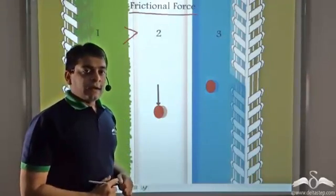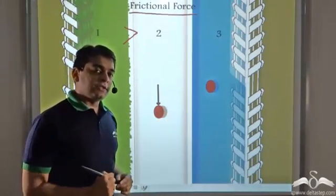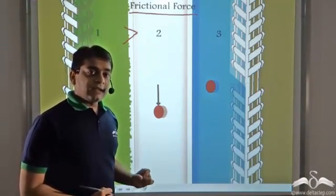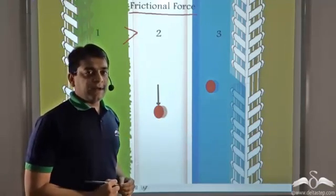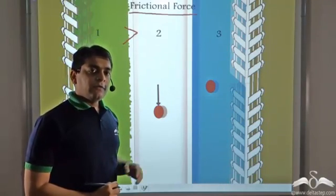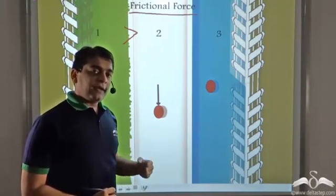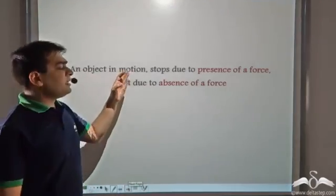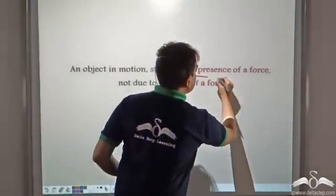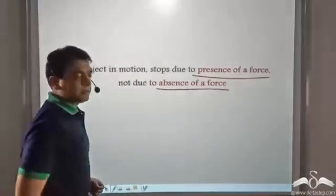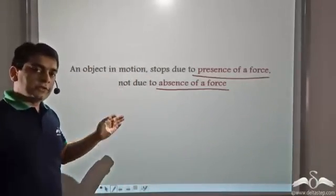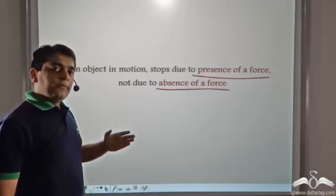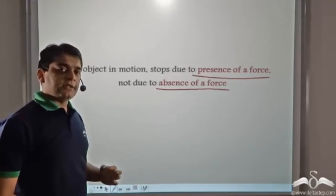Now, what about surface three? Surface three is prepared in such a way that it is frictionless — that is, it does not exert any friction on an object placed on it. We observed that the ball kept moving with the same velocity indefinitely. So we can conclude that an object in motion stops due to the presence of a force, not due to the absence of a force. The frictional force was making the ball stop; without it, the ball keeps moving indefinitely.